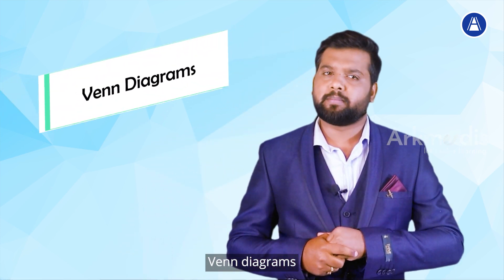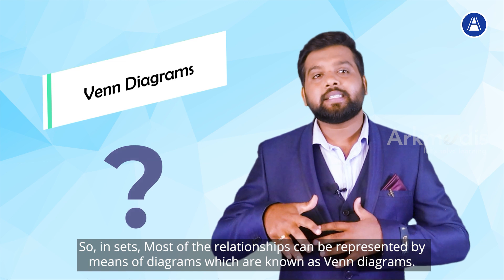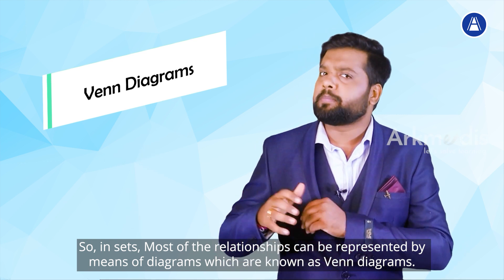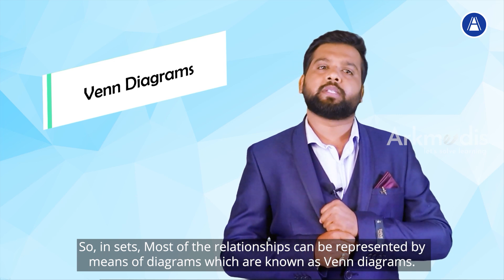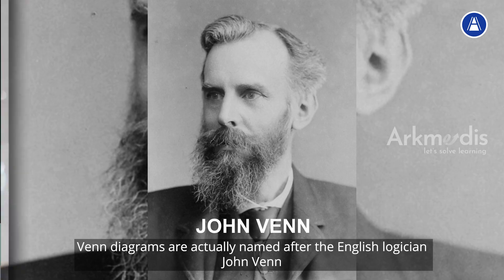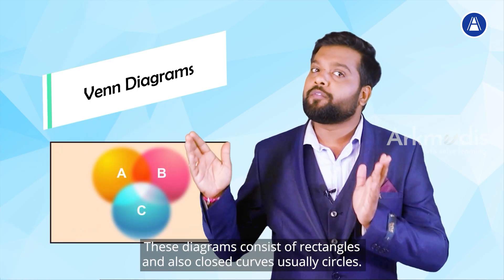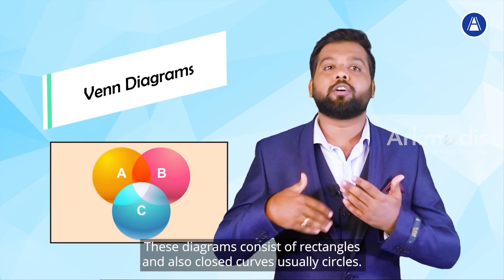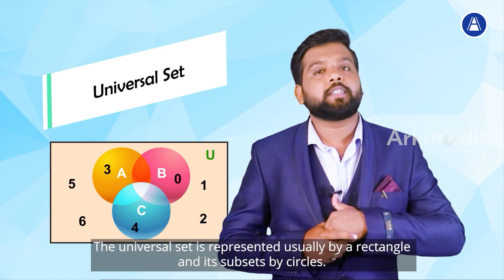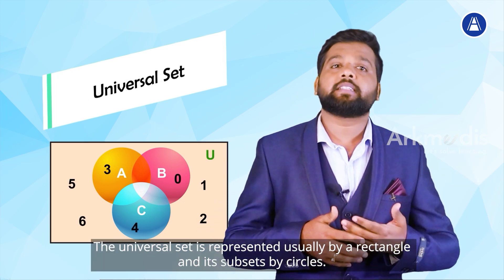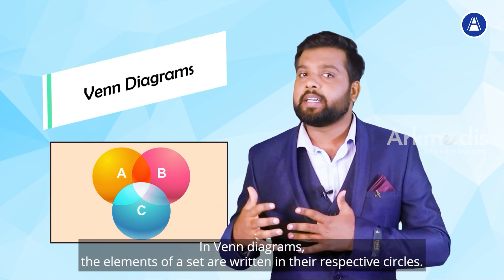Now let's move on to the very important topic: Venn diagrams. In sets, most of the relationships can be represented by means of diagrams known as Venn diagrams. Venn diagrams are named after the English mathematician John Venn. These diagrams consist of rectangles and closed curves, usually circles. The universal set is represented by a rectangle and its subsets by circles. The elements of the sets are written in their respective circles.